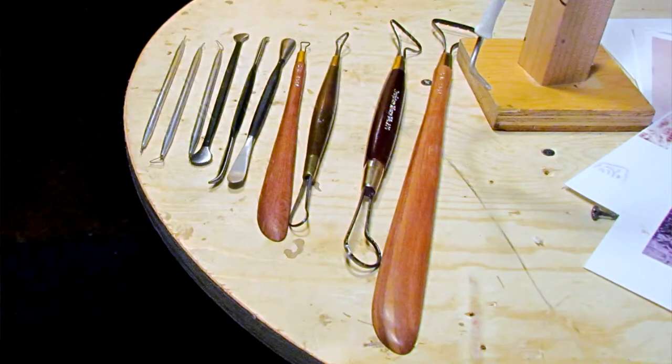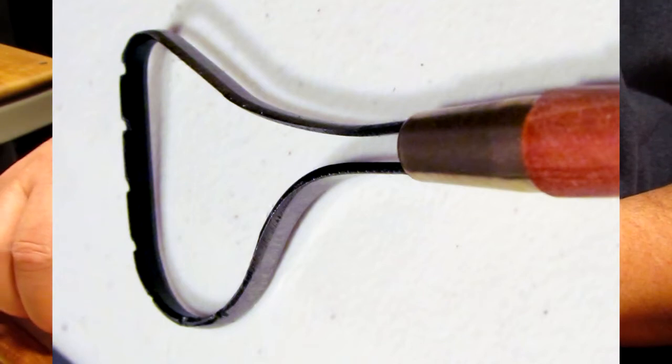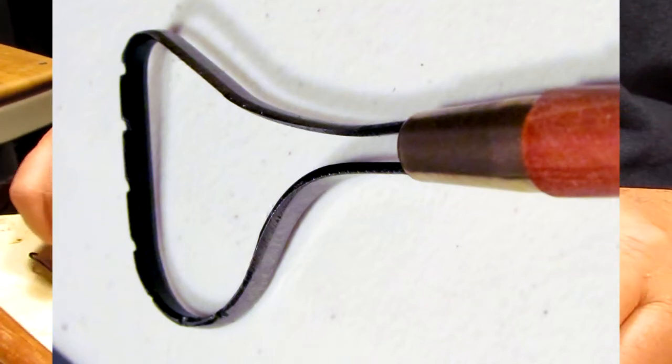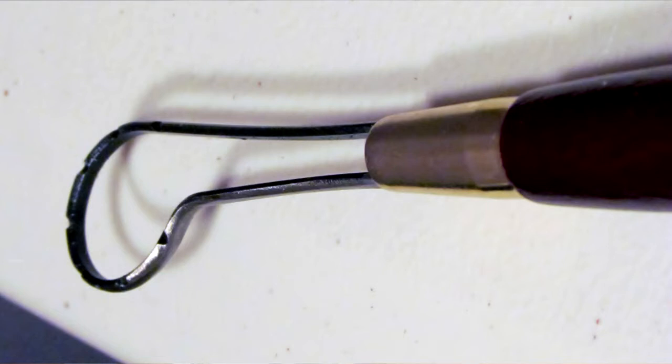And these are great tools. Sculpture House is a great source for them. And you can get Roma clay there, which is a type of clay that I used to use. But it's not a good clay because it develops a surface.